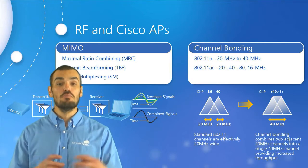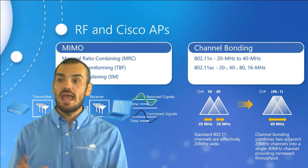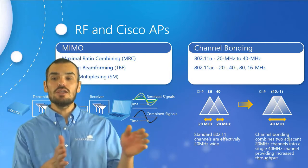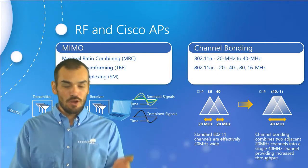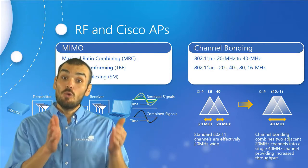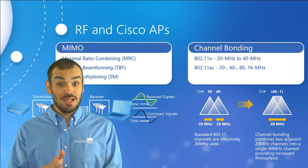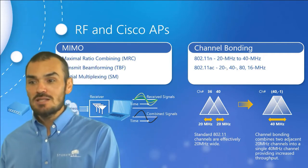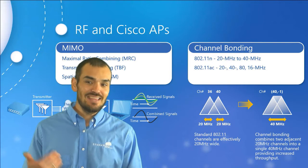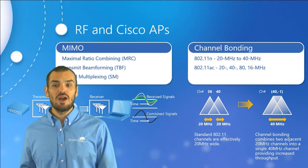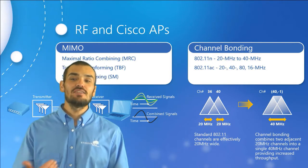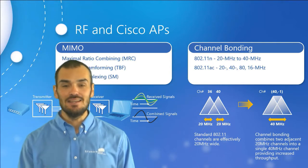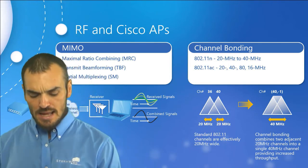802.11ac expanded channel bonding further. Not only can we bond once — going from 20 MHz to 40 MHz — we can double again to 80 MHz, and double again to 160 MHz wide. The transmitting device indicates the channel width it requires prior to transmission, ensuring it doesn't consume more spectrum than it actually needs.